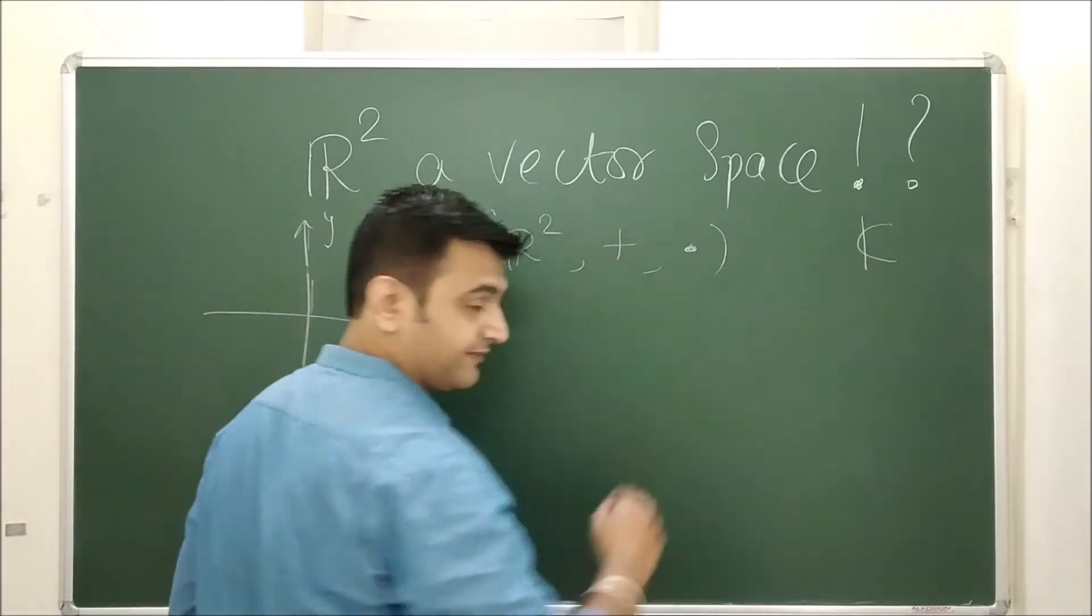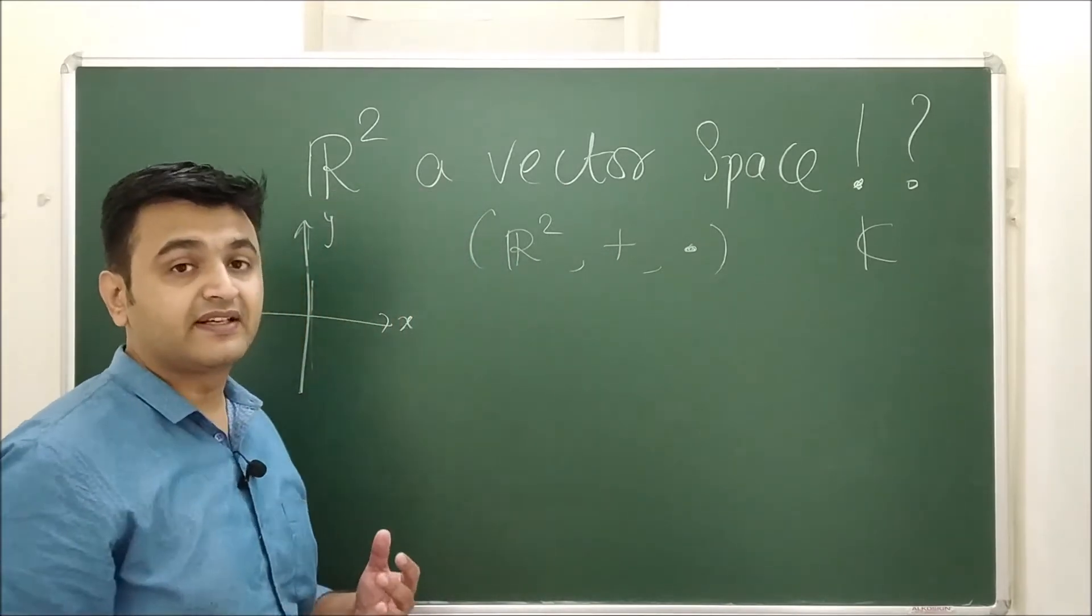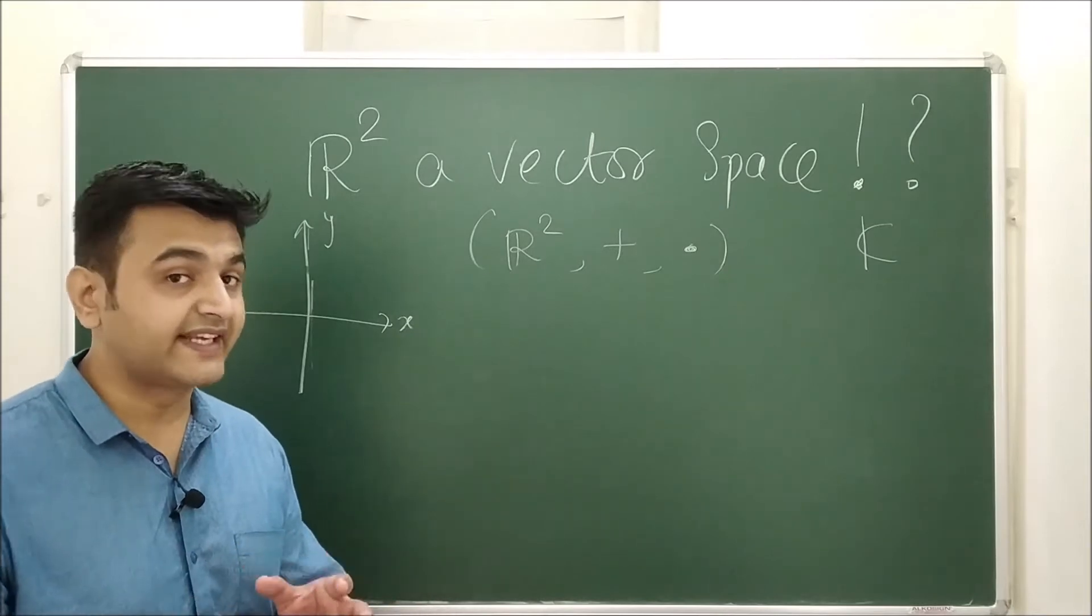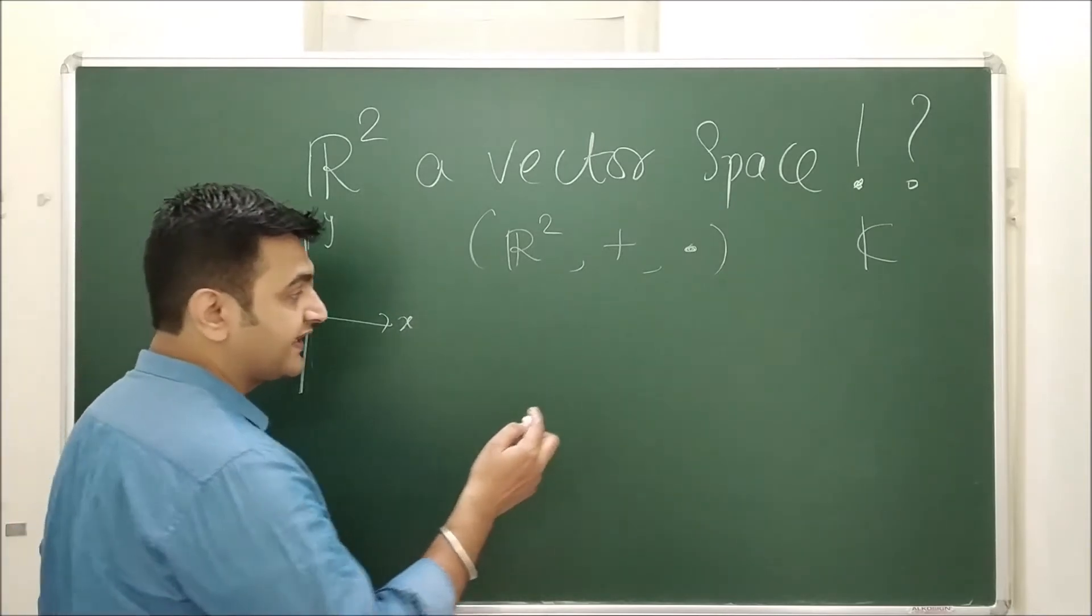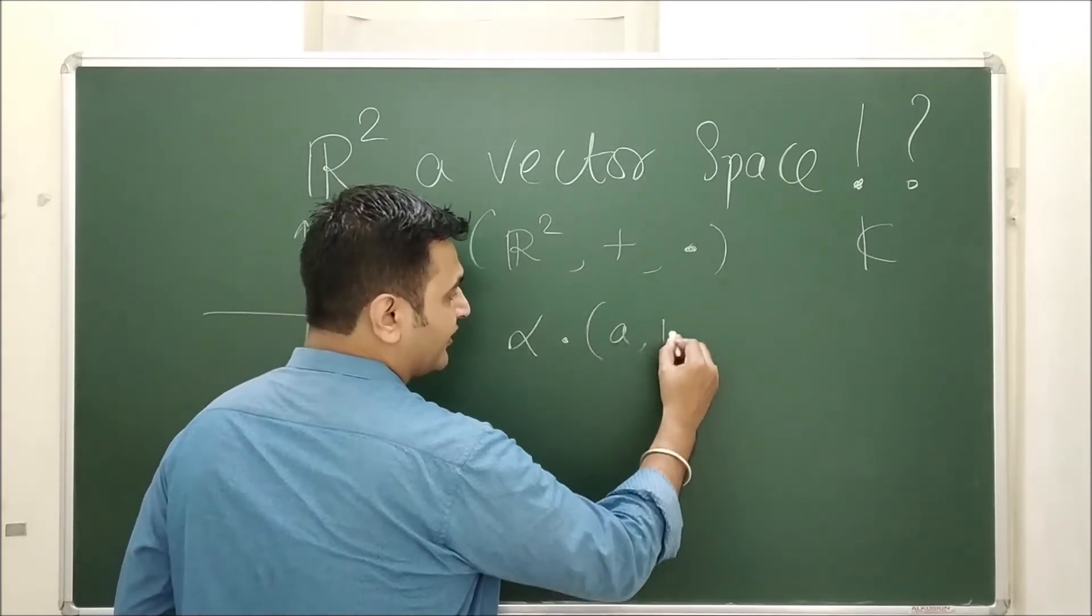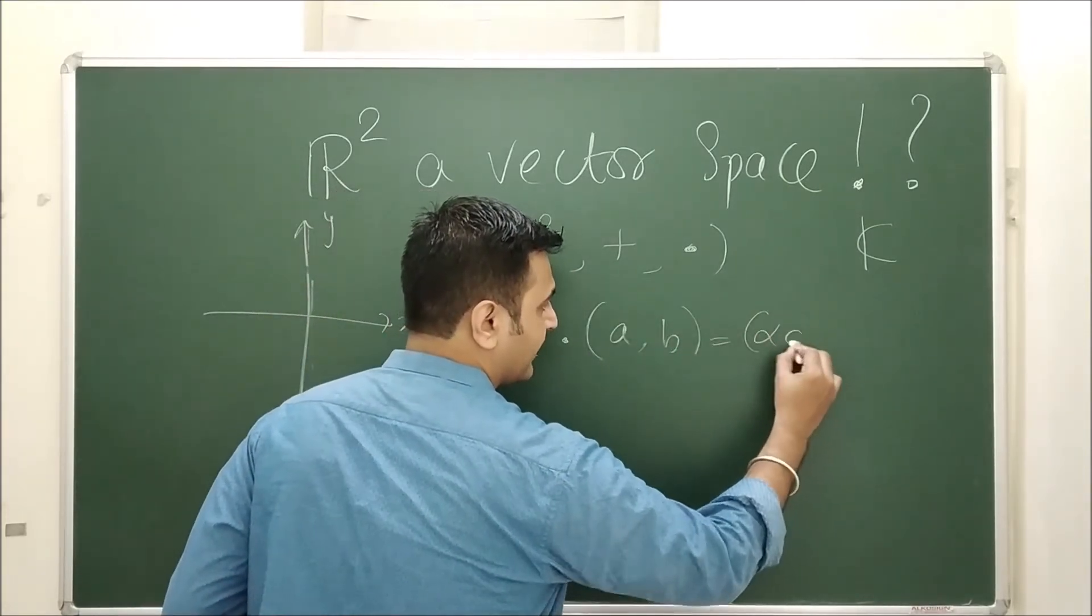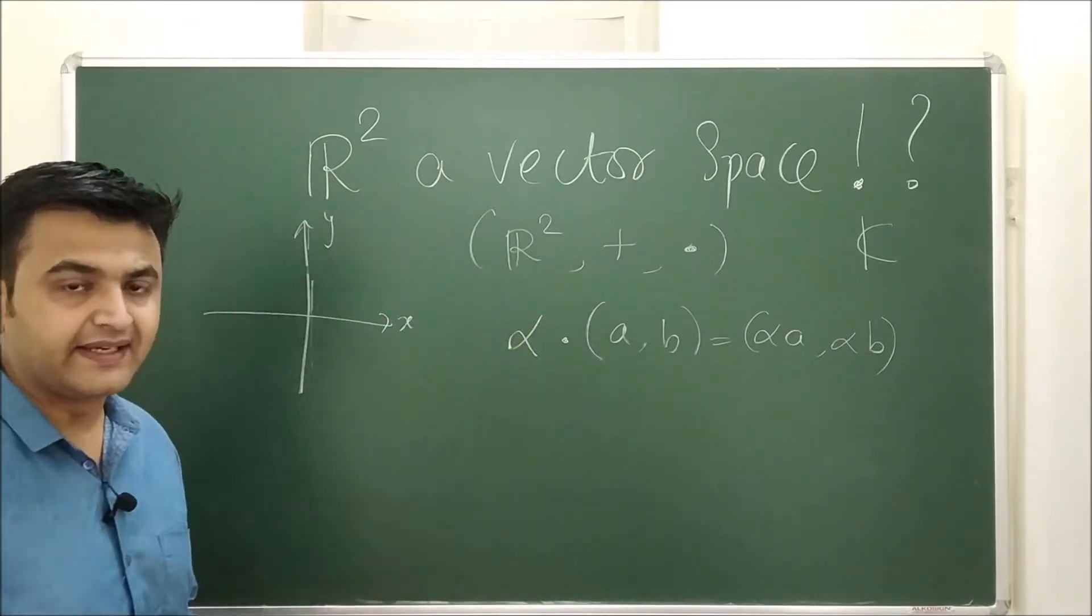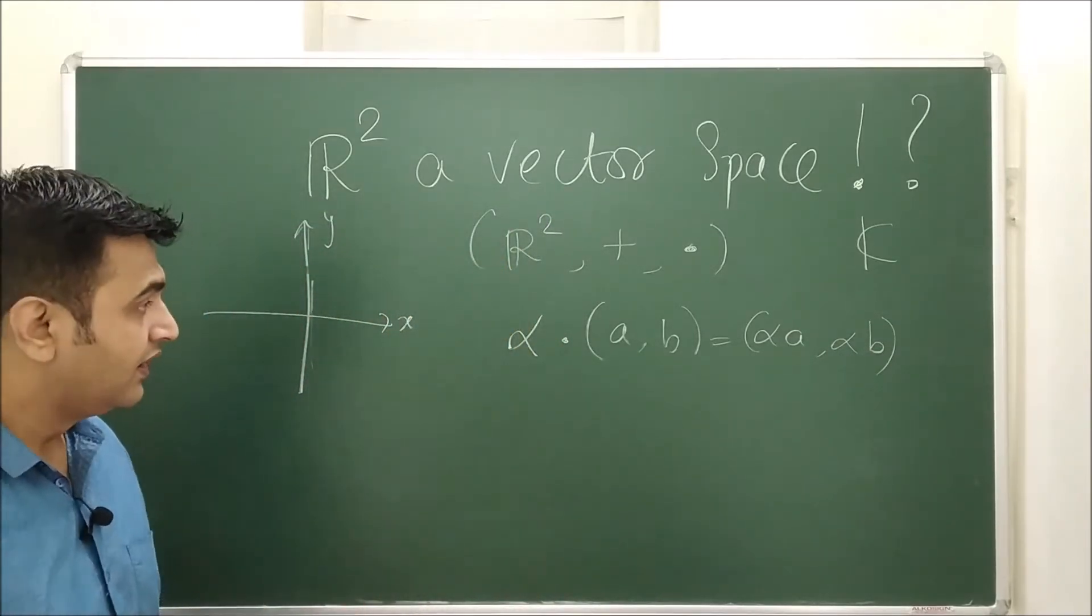If then later on the teacher says I'm asking over complex numbers, then will it form a vector space? Your answer should be no, under usual scalar multiplication. What is usual scalar multiplication? If α belongs to C, what is α into, you take any element of AB?